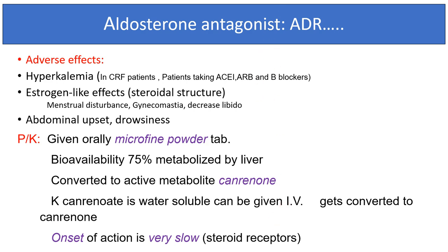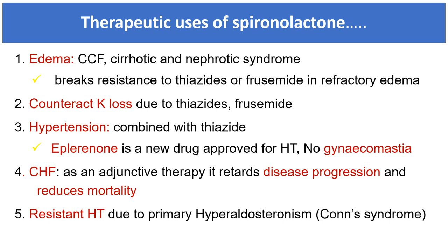Adverse effects of aldosterone antagonists include hyperkalemia, estrogen-like effects such as menstrual disturbances, gynecomastia and decreased libido in males, as well as abdominal upset and drowsiness. Spironolactone can be given orally — microfine powder tablets are available with 75% bioavailability, metabolized by the liver and converted into active metabolites like canrenone. Therapeutic uses of spironolactone include edema in congestive heart failure, cirrhotic edema and nephrotic syndrome. It breaks resistance to thiazides or furosemide in refractory edema, counteracts potassium loss due to thiazide and furosemide, and can be combined with both drugs for hypertension. Eplerenone is a newer drug approved for hypertension with no gynecomastia. Spironolactone is also used as adjuvant therapy in congestive heart failure to retard disease progression and reduce mortality, and in resistant hypertension due to primary hyperaldosteronism.